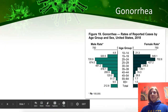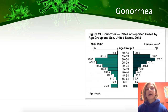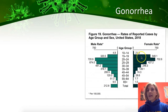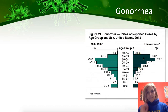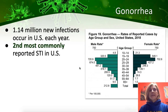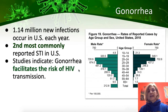Okay, gonorrhea. Starting with the graph — the biggest bar is right here in the 20 to 24 year old range, and we have quite a few in the high school range as well. These are reported cases in 2018. 1.14 million new infections occur of gonorrhea every single year. It's the second most commonly reported STI in America.